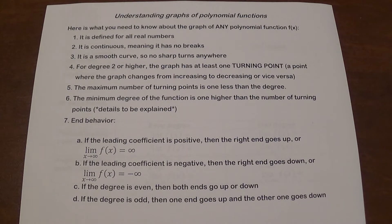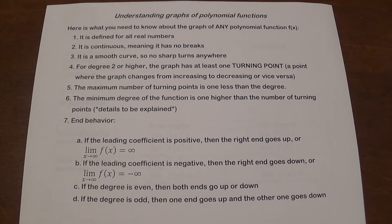The graph is going to be continuous — no breaks. It is going to be a smooth curve, no sharp turns. Everything is going to be nice and smooth. For degree two or higher, starting with quadratic, the graph is going to have at least one turning point, which is where the graph changes from increasing to decreasing or the other way around.